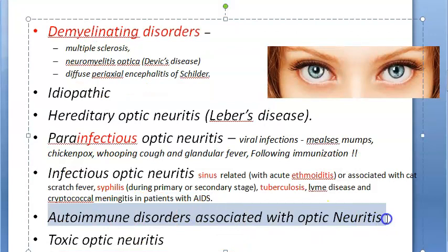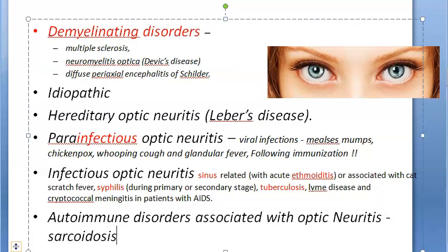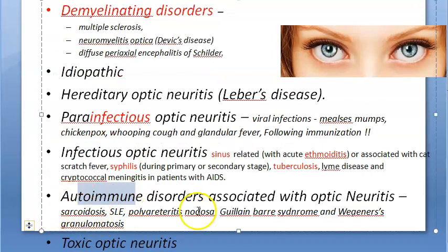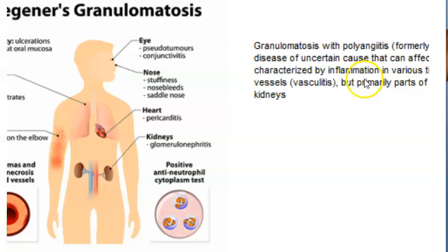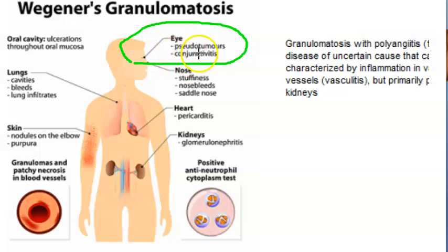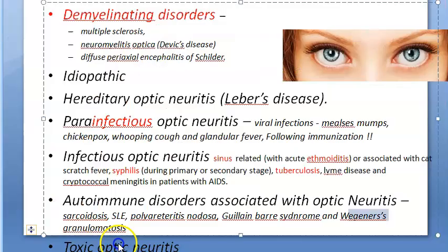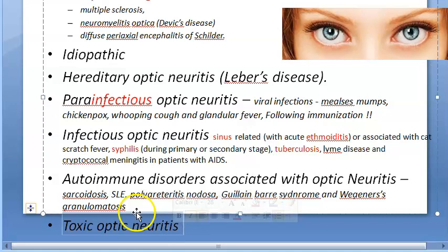Autoimmune disorders are also associated with optic neuritis. These include sarcoidosis, systemic lupus erythematosus (SLE), polyarteritis nodosa, Guillain-Barré syndrome, and Wegener's granulomatosis — now called granulomatosis with polyangiitis. In the eye, Wegener's can cause pseudotumors, conjunctivitis, and also optic neuritis.